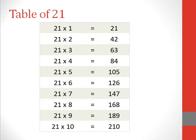Table of 21. 21 1s are 21, 21 2s are 42, 21 3s are 63, 21 4s are 84, 21 5s are 105.